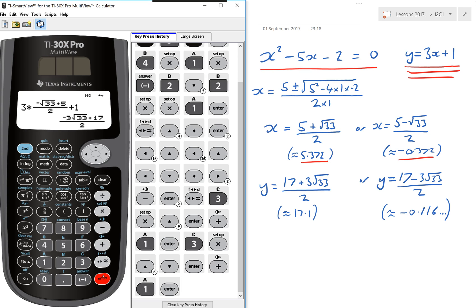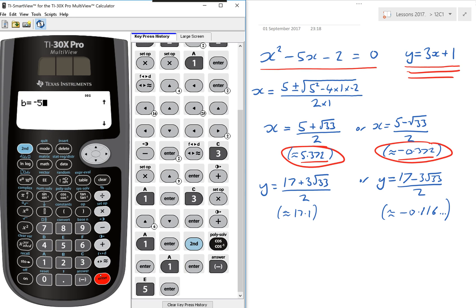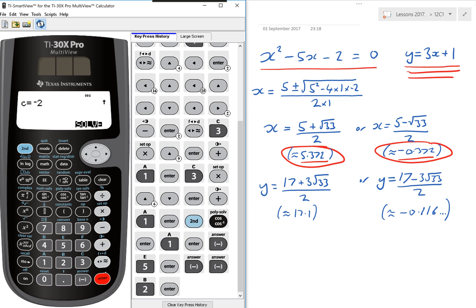Of course, I could use the polynomial solver. So if I go second polynomial solver and solve the quadratic, then I can actually solve this. So a is 1. Enter that. B is negative 5. So enter that. And C is negative 2. Enter that. And then solve. It gives me this one here, the negative 0.3. And it's also given me the other one here.